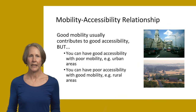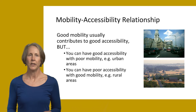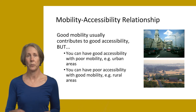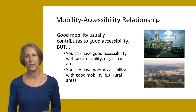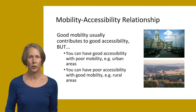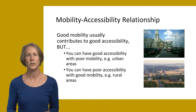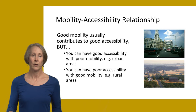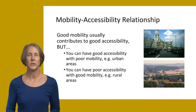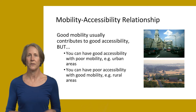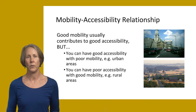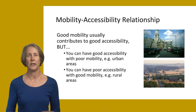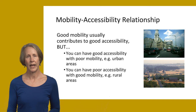Of course these things are related in that good mobility usually contributes to good accessibility. But you can have good accessibility with poor mobility, which is often the case in very congested urban areas where it's hard to move around but you're very close to your destinations and have a lot of mode choices. And you can also have poor accessibility with good mobility, which is often the case in rural areas where it's easy to move around but destinations are far away and you may be entirely lacking some of the destinations you'd like to have.